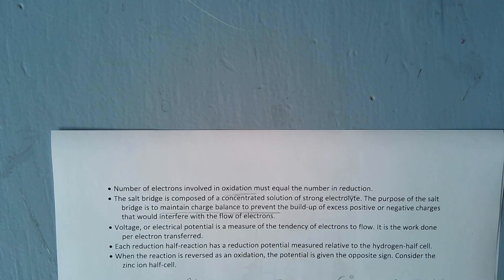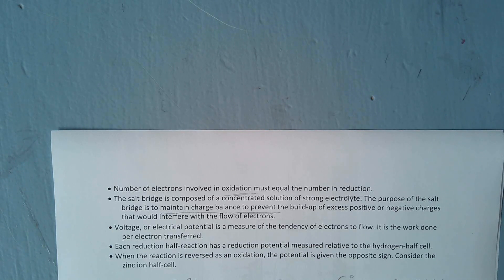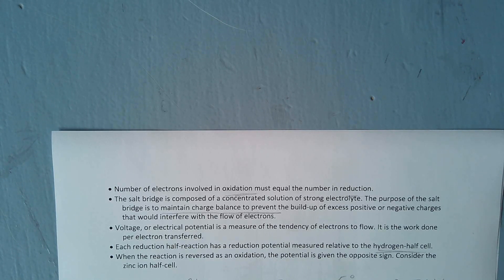Voltage is a description of the electron flow. We looked at the table of reduction half-reactions and talked about which is the stronger oxidizing agent as you go up the table — we ignored the voltages then. Now let's look at the voltage. We arbitrarily define the hydrogen half-cell as zero volts, and all the other half-cell voltages are in relation to that.